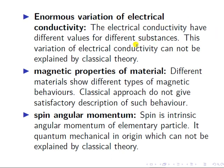Another limitation is the enormous variation of electrical conductivity. The electrical conductivity — which is the reciprocal of resistivity — has different values for different substances. This variation of electrical conductivity for different substances, which show different kinds of electrical behavior, cannot be explained by classical theory.